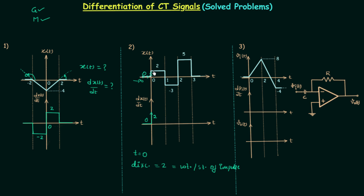Moving forward, we have a constant value equal to two from zero to one, so the slope is equal to zero. When t is equal to one, we again have a discontinuity — this time from two to minus three. The net value of the discontinuity is five, and since it is a falling edge, the sign of the strength of the impulse will be negative. So we have an impulse with weight minus five at t equal to one.